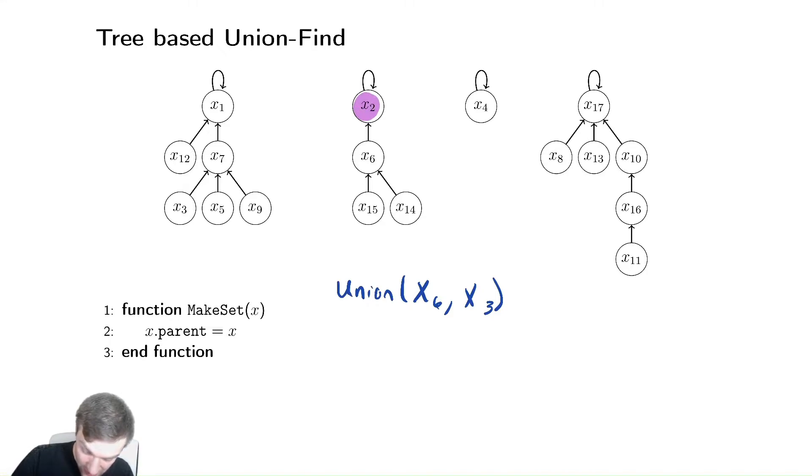Then I would also need to find the representative for x3, which is x1. And then I need to combine them in some way. Just like we saw with linked lists, we're going to combine these by just joining them up. So all we're going to do is take x2, and rather than having it pointed at itself, we're just going to make it point at x1 instead. So we're going to make one of the tree's parent be the representative from the other tree. That's very straightforward.